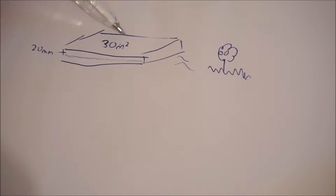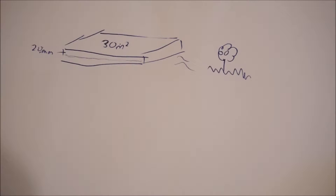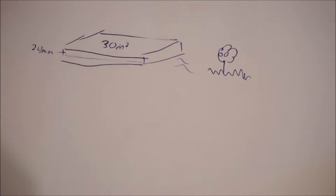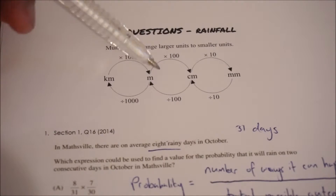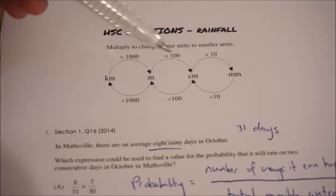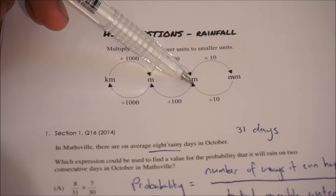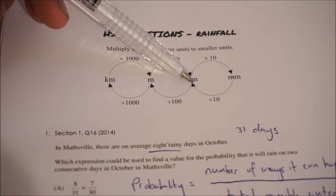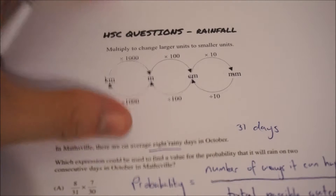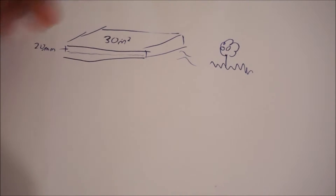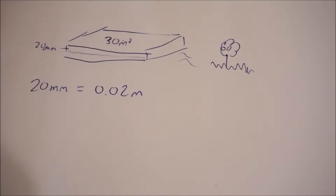I want to convert these into the same units. Right now I have square meters and millimeters. I want to convert 20 millimeters into meters because it's easier to convert units of length rather than units of area. So 20 millimeters divided by 10 gives 2 centimeters, then divided by 100 gives 0.02. So 20 millimeters equals 0.02 meters.